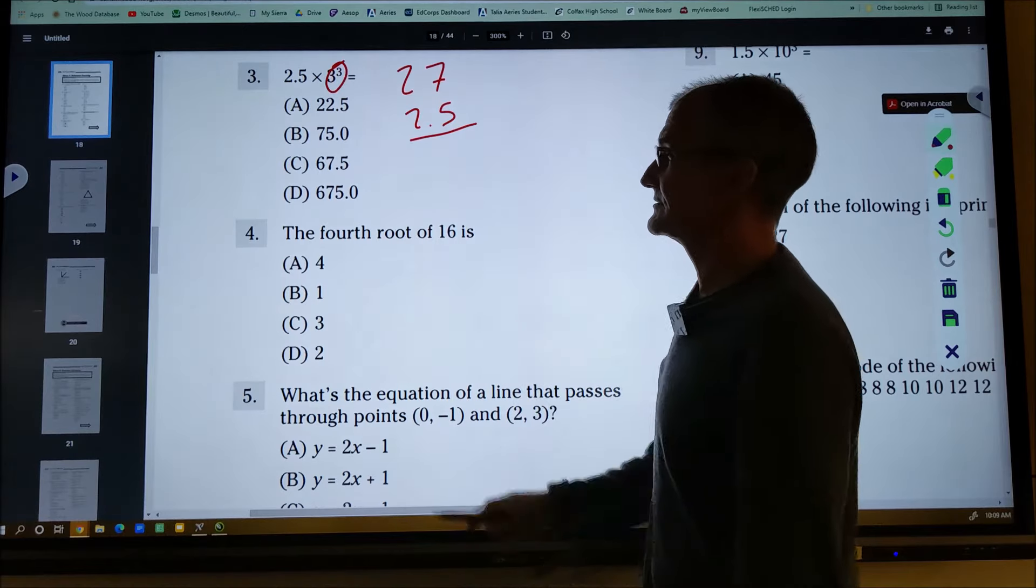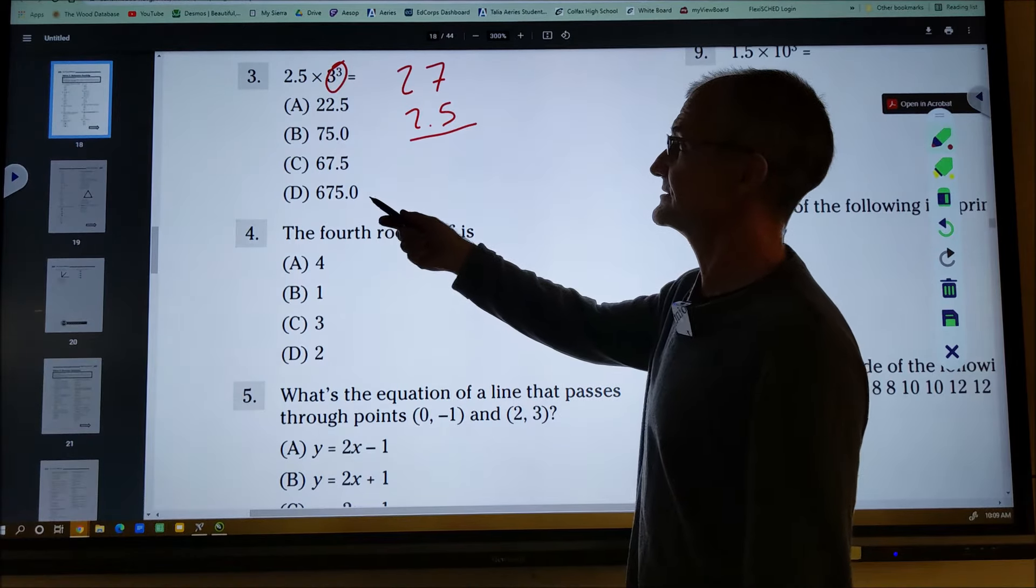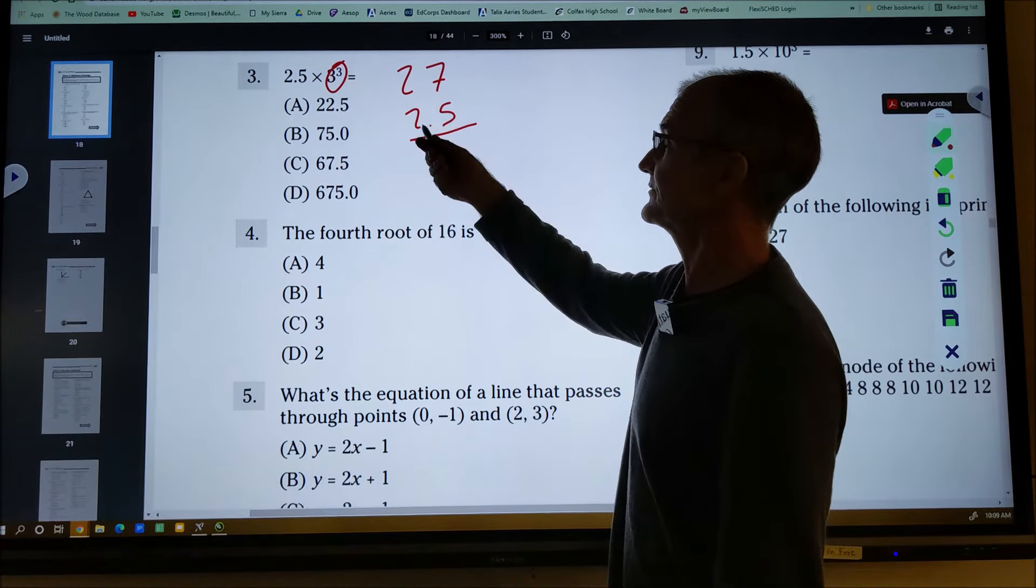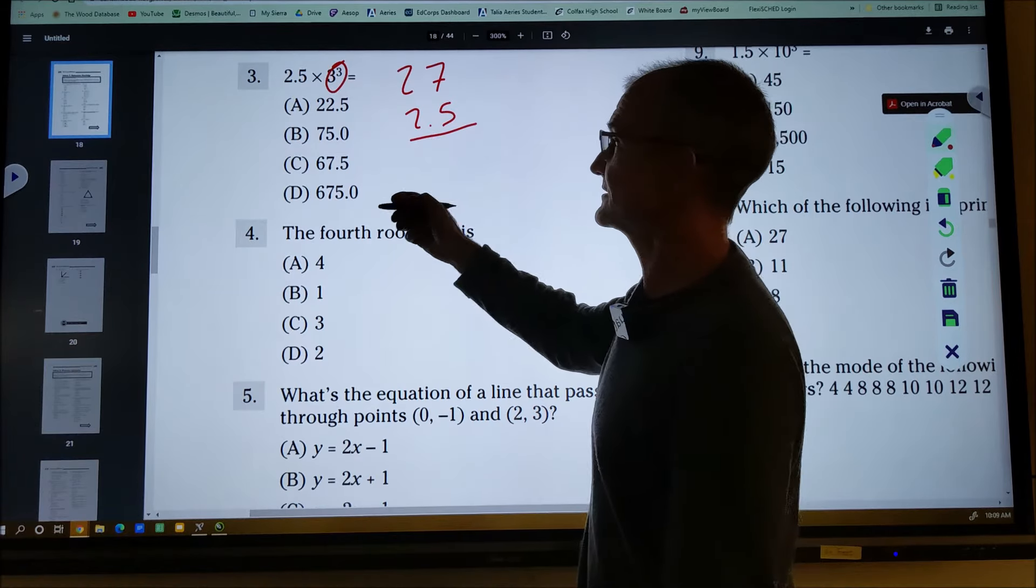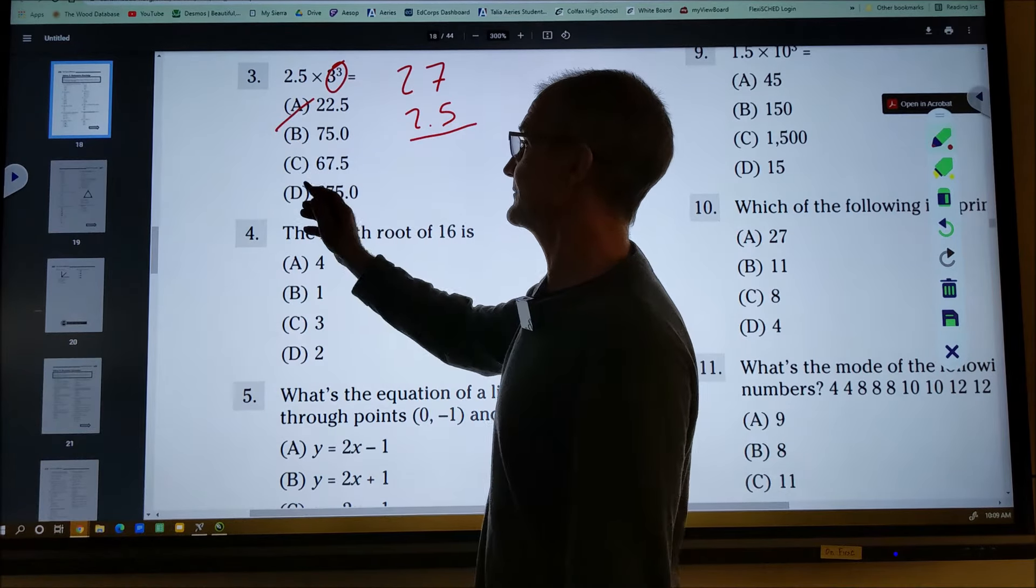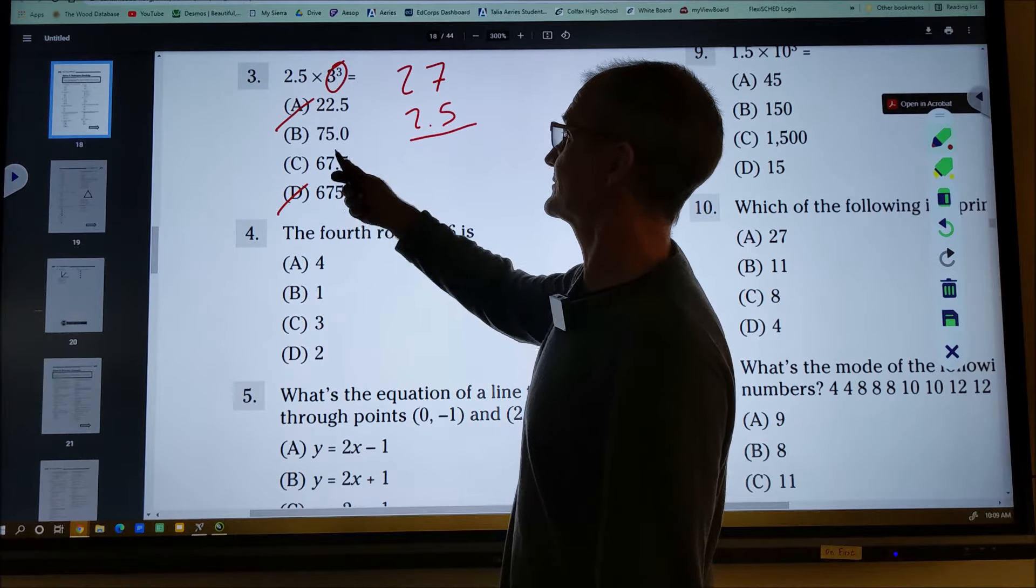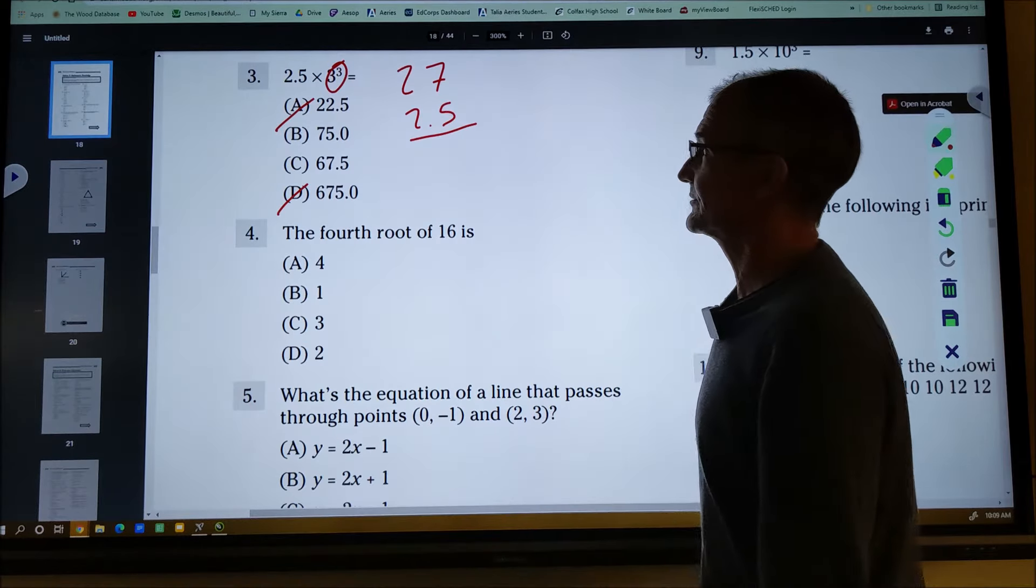And even before I do that, I'm just going to look at my answers and see if any makes sense. So 27 times two is about 50, more than 50. So it can't be that one and it can't be that one. But I'm not sure which one of these it is. So I think I will multiply it out.